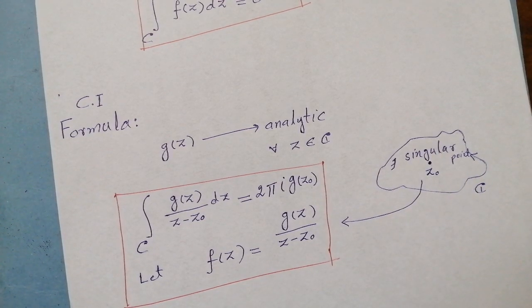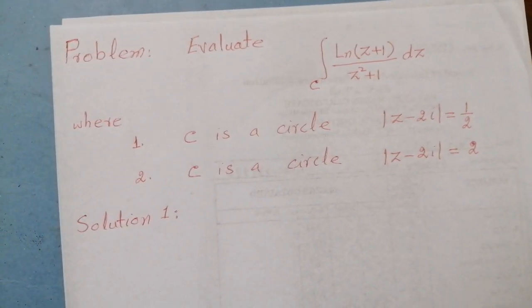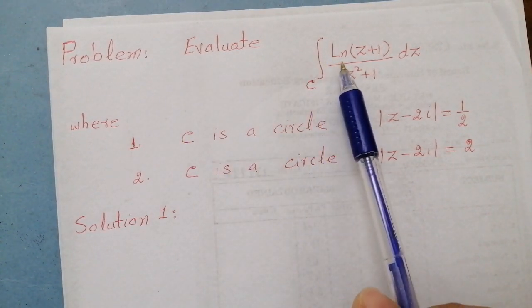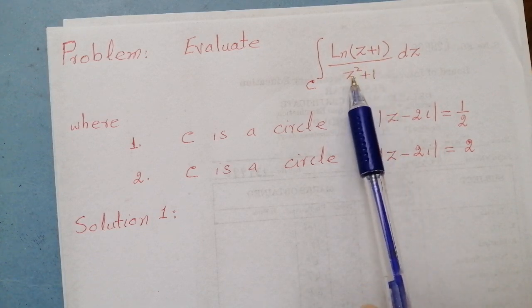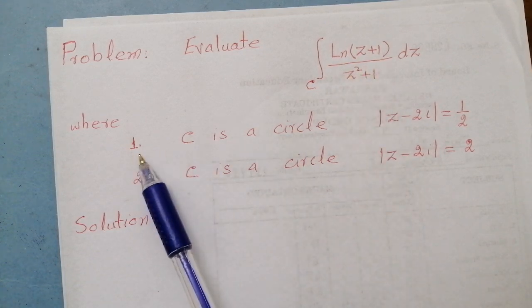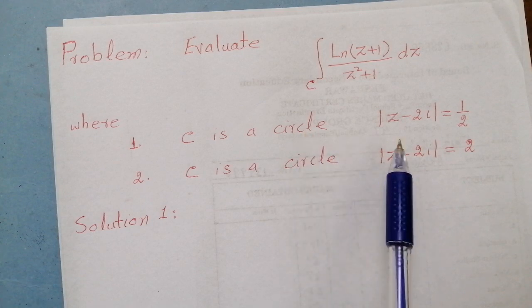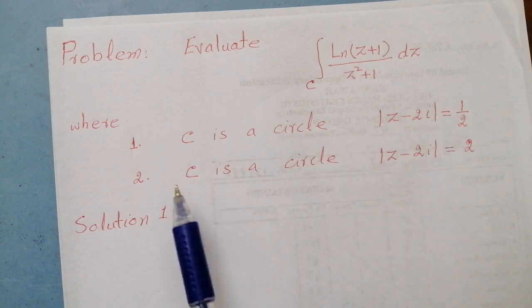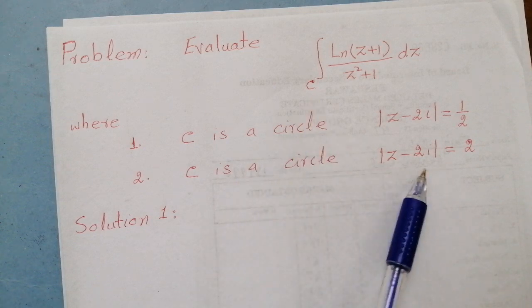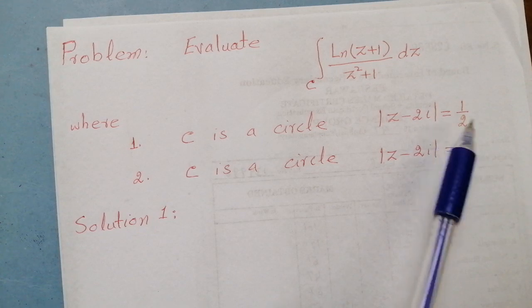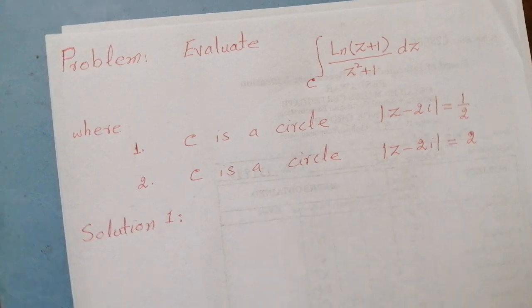Now let us solve a problem. In this problem we will take two domains. Evaluate the integral of log(z+1) over (z²+1). In the first part, the curve C is a circle of one form, and in the second part the curve C is a circle of a different form — the radii are different. So let us start the solution.